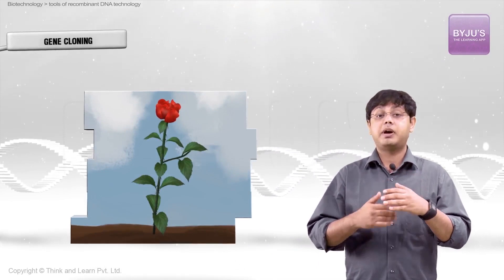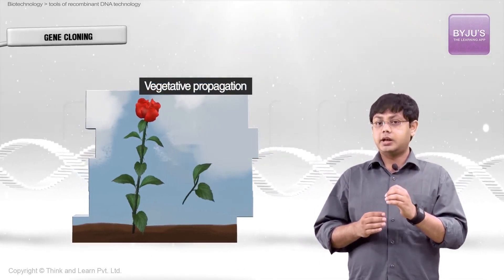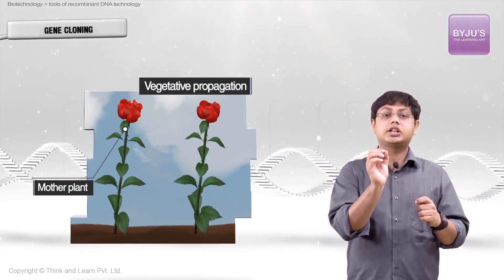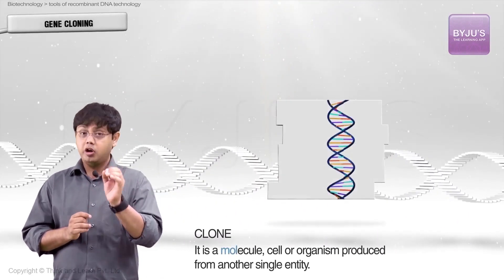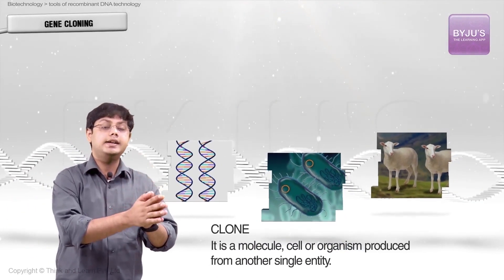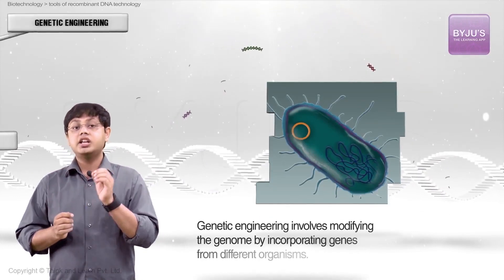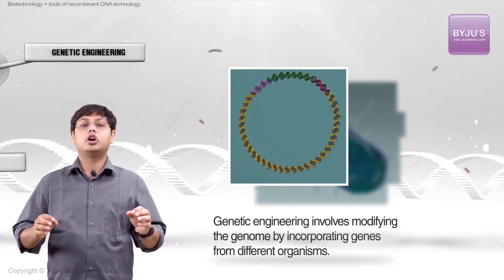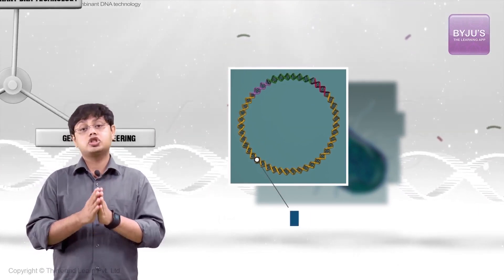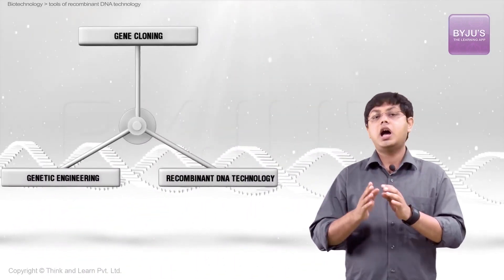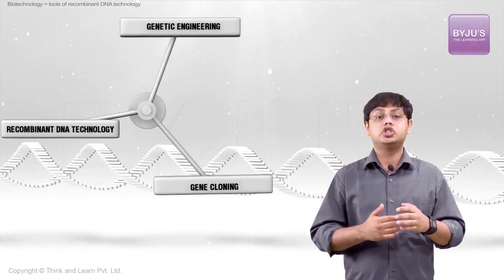Typically, this happened in plants by vegetative propagation where a twig, for example, cut off from a mother plant could grow into a new plant which is an exact copy of the mother plant. A modern biological definition of a clone is a molecule, cell, or an organism produced from another single entity. Whereas genetic engineering is based on modifying the genome by incorporating genes from different organisms. Genetic engineering leads to recombinant DNA. Therefore, the terms recombinant DNA technology and genetic engineering are frequently interchanged.